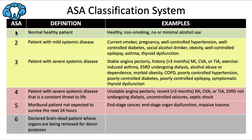Let's go through this chart one row at a time. We start with ASA 1, which is a normal healthy patient. This would be someone who is not a smoker, has no or minimal alcohol use, and none of the other conditions we'll mention apply. They're perfectly healthy. This is actually fairly rare — it's pretty rare to find somebody who falls perfectly in the ASA 1 category. For this kind of patient, no special precautions are needed for dental treatment.